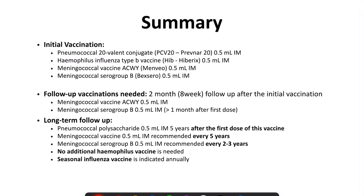In summary, initial vaccination should include PCV20 if available. If not, PCV15 or PCV13, subsequently followed by PPSV23. The second vaccine is Haemophilus influenzae type B. The third is meningococcal ACWY vaccine and meningococcal serogroup B vaccine. These four vaccines are needed during initial management of asplenia or pre- or post-splenectomy. At follow-up after 8 weeks, patients should receive the next dose of meningococcal ACWY vaccine and the meningococcal serogroup B vaccine.